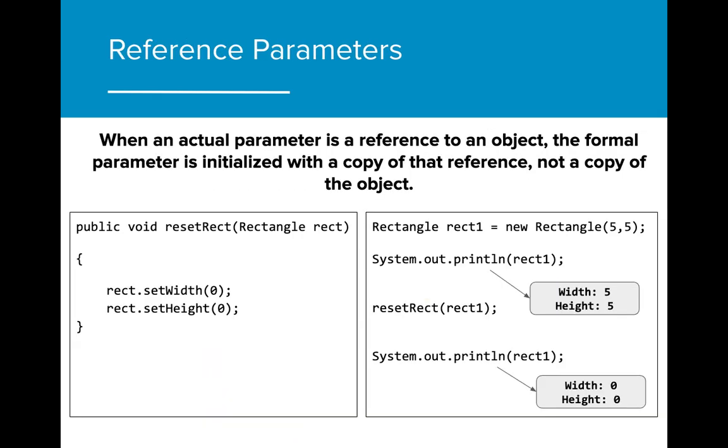While primitive values pass copies to a method parameter, a reference variable will pass a copy of the reference, not a copy of the object. This means that any changes made to a reference variable in a method will affect the original reference.